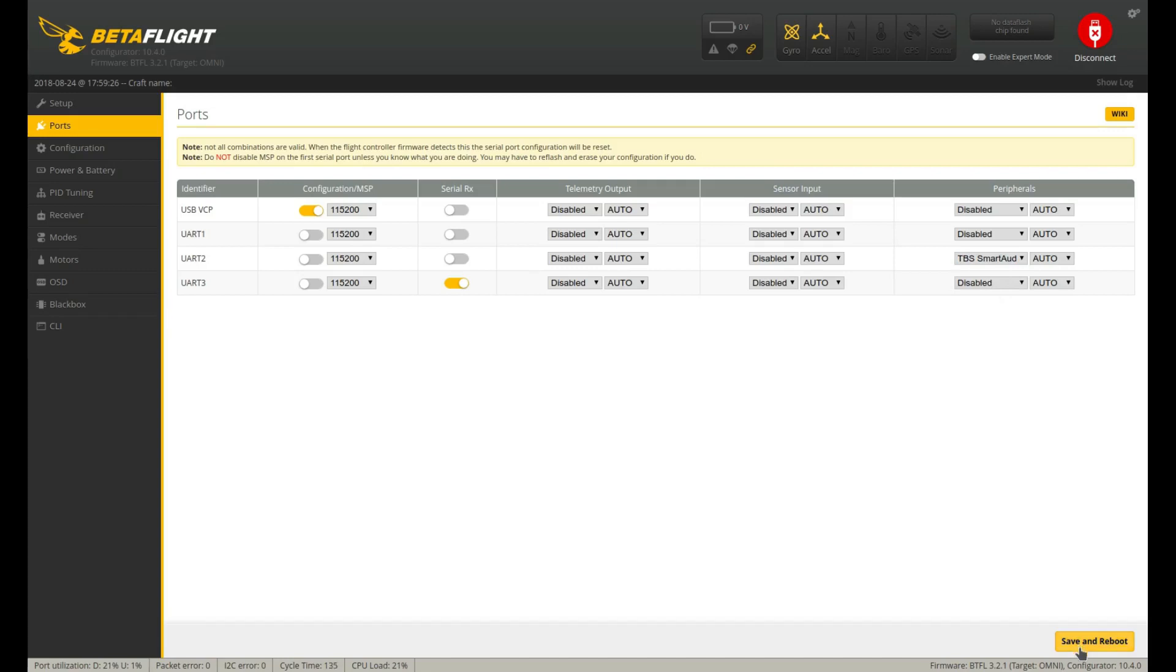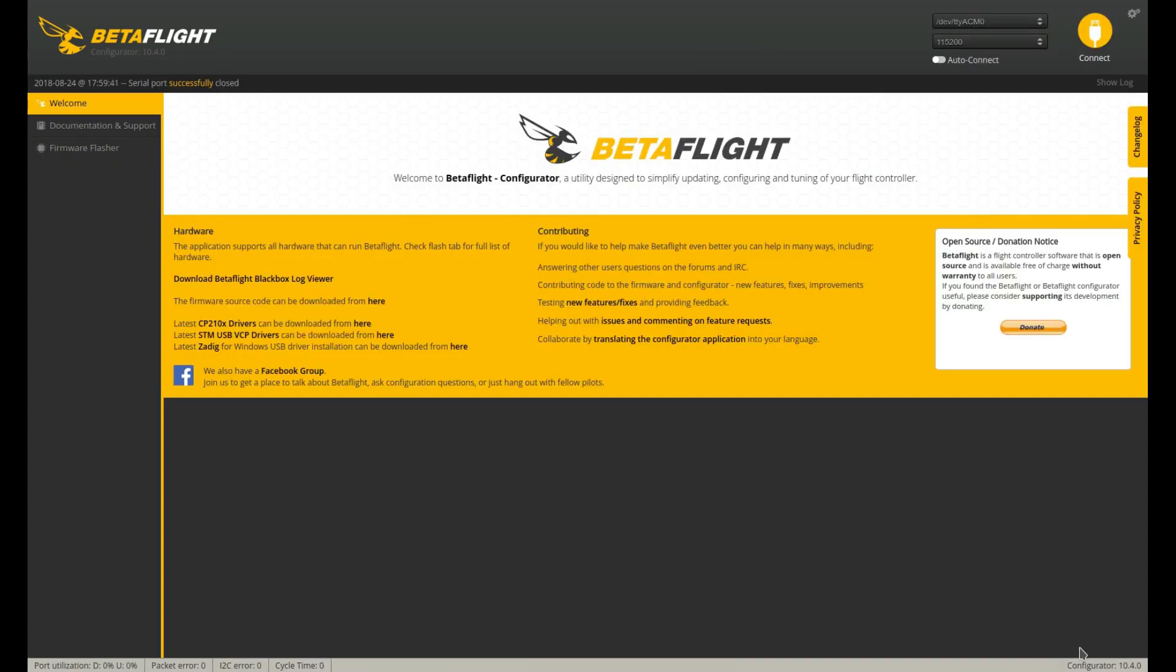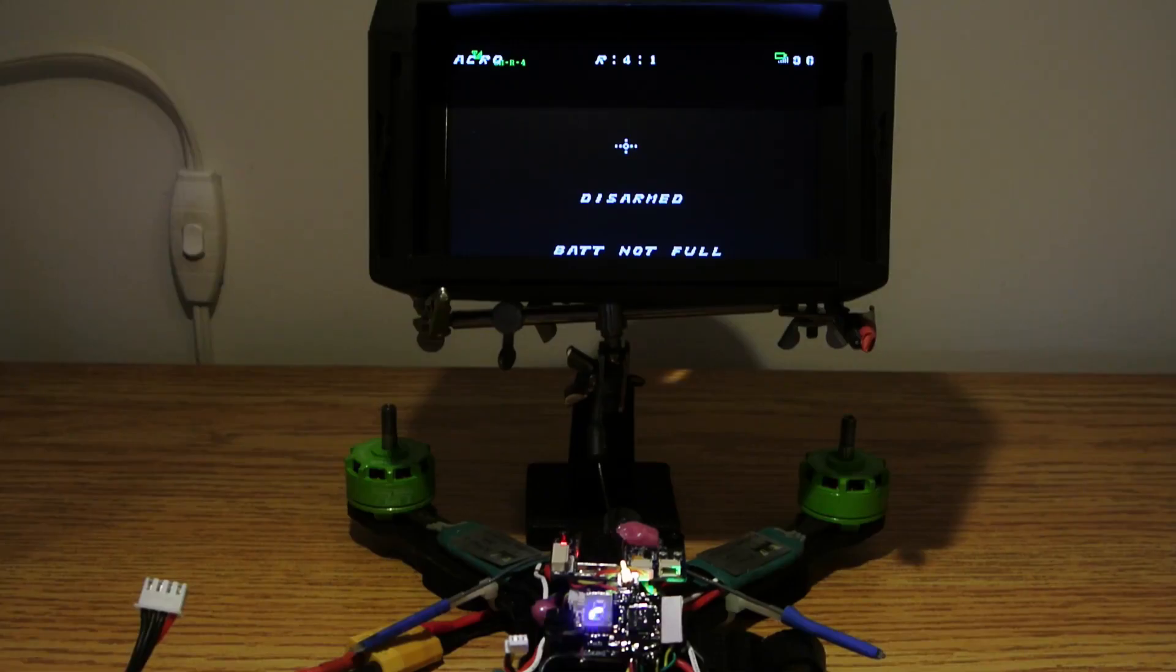If you don't have a free UART, soft serial can also be used. This is all you need to get the basic smart audio working in Betaflight.